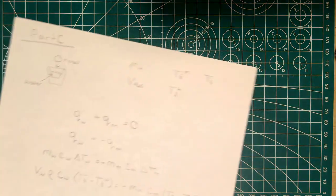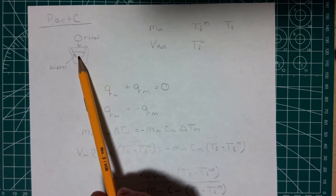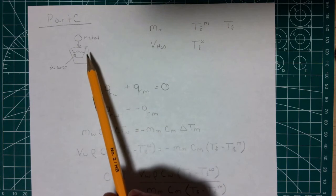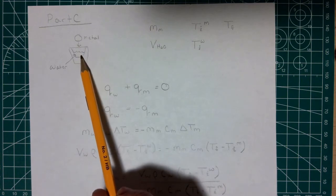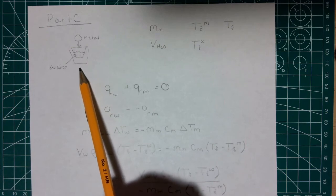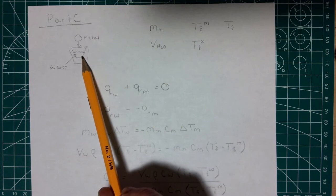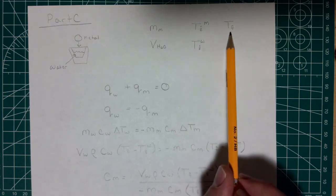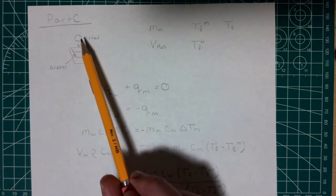Part C is a little trickier. We imagine we have that calorimeter with some water in it, and we drop in a hot metal ball. It comes to equilibrium, and all the heat that left the metal goes into the water because there's no heat leaving the system — this is what we call an adiabatic system. We're given the mass of the metal, the volume of the water, the initial temperature of the metal, the initial temperature of the water, and the final equilibrium temperature.